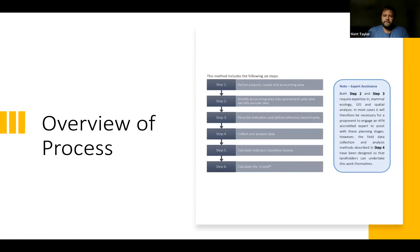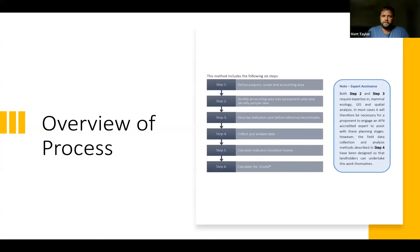Step three is describing the indicators and determining the reference benchmarks — the reference list of species you'd expect to find on a property. Step four is collecting and analyzing the data — getting out there, finding locations where fauna will be, setting up cameras, and capturing that rich dataset of all the species present. Step five is calculating the condition metrics the AFN framework is based around, and step six is calculating the Econ — a headline score rating condition from zero to 100.